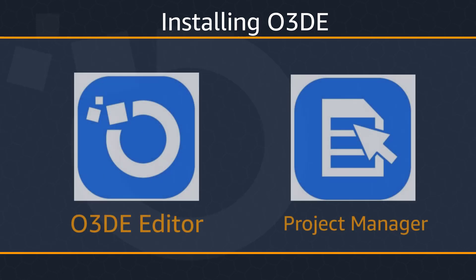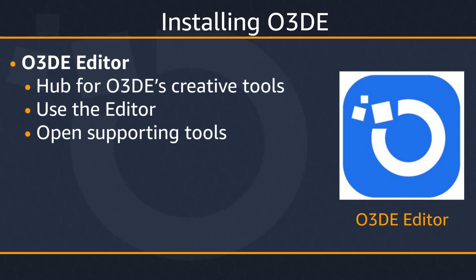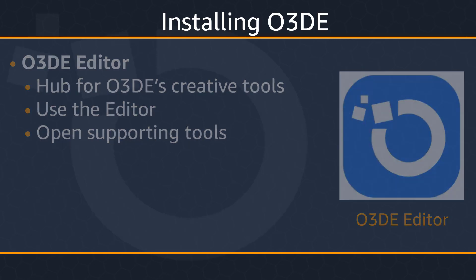The installer creates the following two shortcuts on the desktop for common O3DE applications. First, we have the O3DE Editor, which is the central hub for O3DE's creative tools. To help you implement your project's goals, use Editor to place and group entities, add components, configure properties, and open supporting tools such as the Animation Editor and Script Canvas.